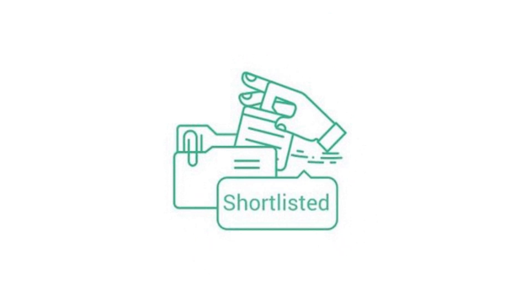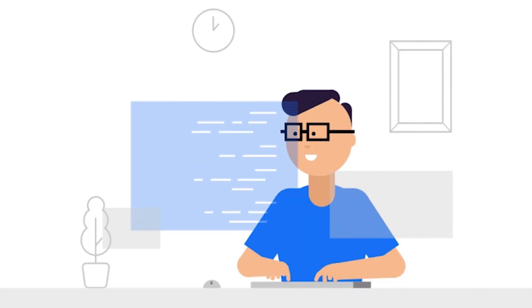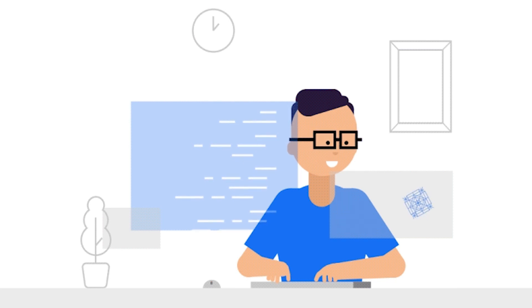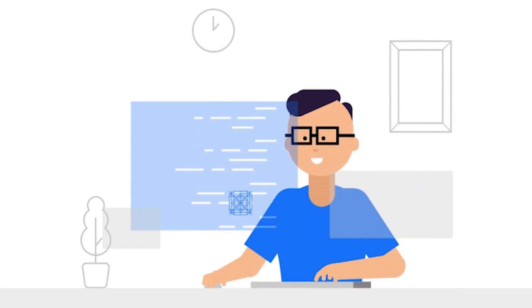There are different test rounds — test round one and test round two. Based on your scores and qualifications, you would be shortlisted and selected for the Microsoft Engage program. Once selected, you will get training from Microsoft mentors who will guide you. Then you need to build a complete project.